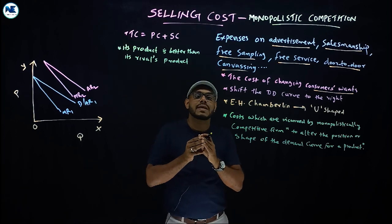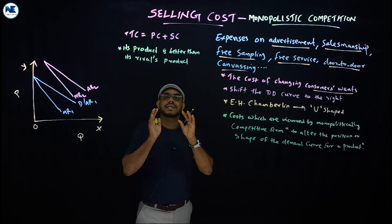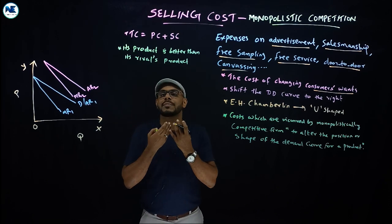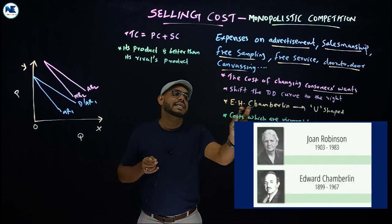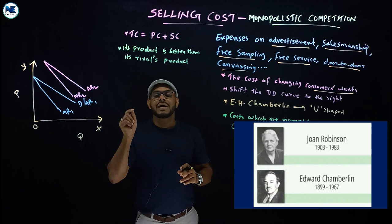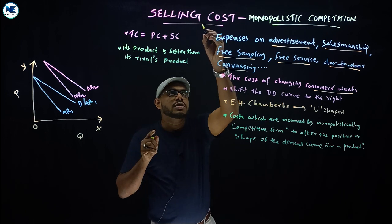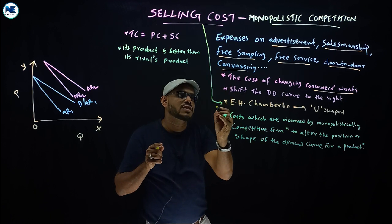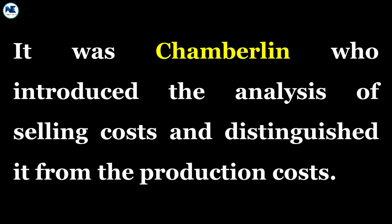Who introduced the selling cost? In monopolistic competition, two economists discussed it: the American economist Edward Hastings Chamberlain and the British economist Mrs. Joan Robinson. Selling cost is associated with E.H. Chamberlain, who introduced this concept for the first time.